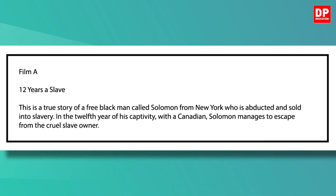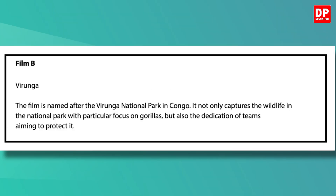Let's read the descriptions of the films now. Film A: 12 Years a Slave. This is a true story of a free black man called Solomon from New York who is abducted and sold into slavery. In the 12th year of his captivity, Solomon manages to escape from the cruel slave owner. Film B: Virunga. The film is named after the Virunga National Park in Congo. It not only captures the wildlife in the national park with particular focus on gorillas, but also the dedication of teams aiming to protect it.